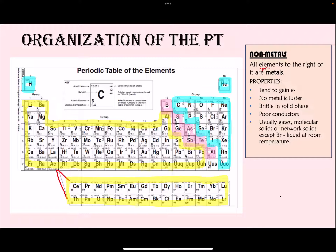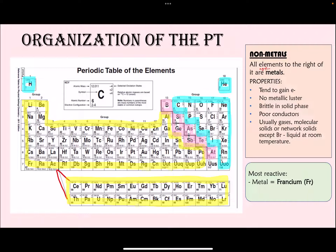Non-metals are either molecular solids or network solids and in most cases do not exist alone. Bromine is an exception — it is a non-metal that is a liquid at room temperature. The most reactive metal on the periodic table is francium, and the most reactive non-metal is fluorine.